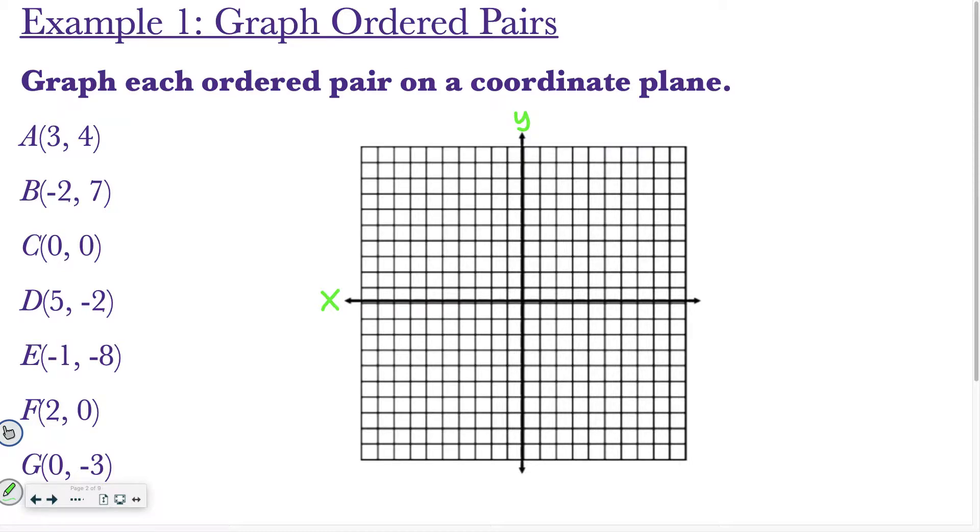So, this is your negative x, it works like a number line. This is your positive x, and then this going up would be your positive y, and below would be your negative y.